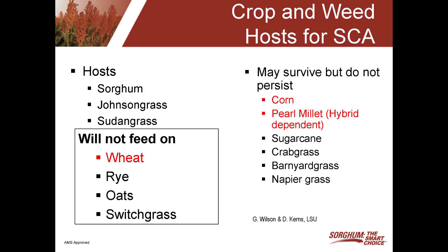The sugarcane aphid really isn't a problem in corn. It doesn't feed on winter grasses like wheat, rye, and oats. You might see a few show up on wheat simply because the wind blows aphids into the field, but they shouldn't feed on wheat and shouldn't persist at all in a wheat, rye, or oat crop.